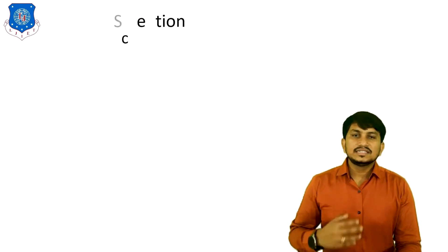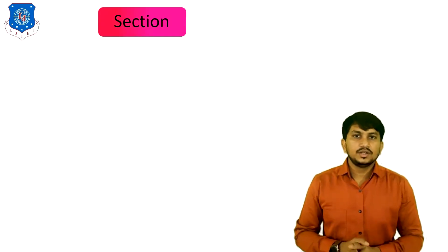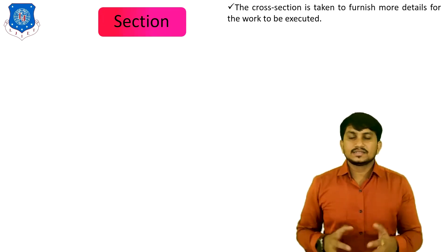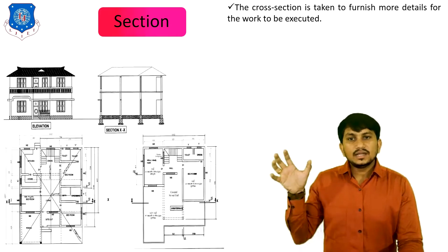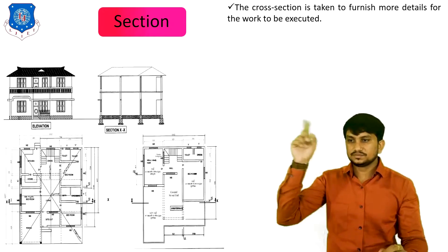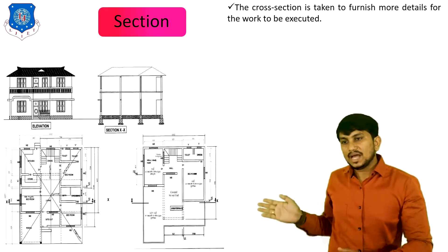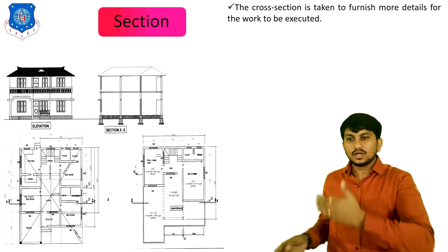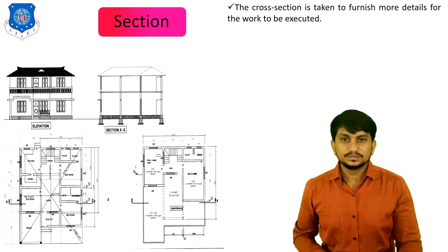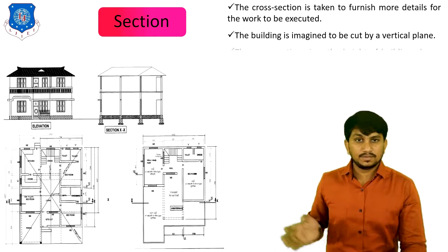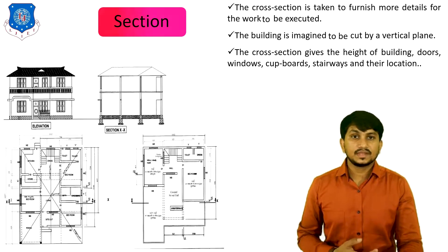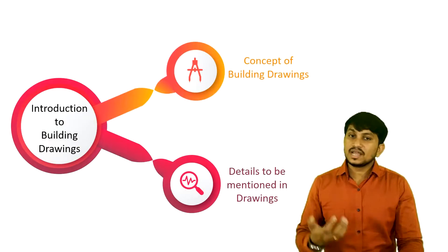If you have the plan and elevation, you can easily draw the section of the building. It gives more details for the work to be exhibited. From the elevation you can take the height, and for drawing the section you cut the plan with a vertical line and view it from one side. The cross-section gives the height of the building, doors, windows, covers, stairways, and their locations.